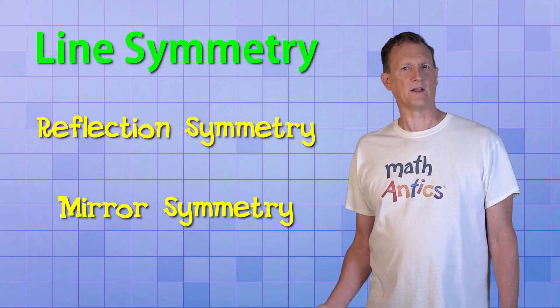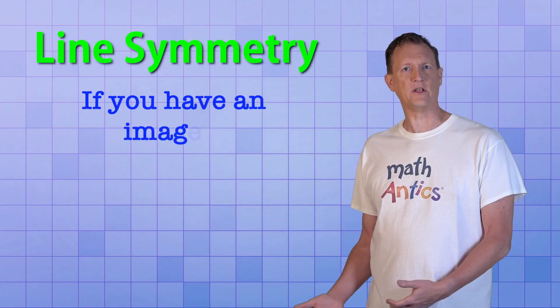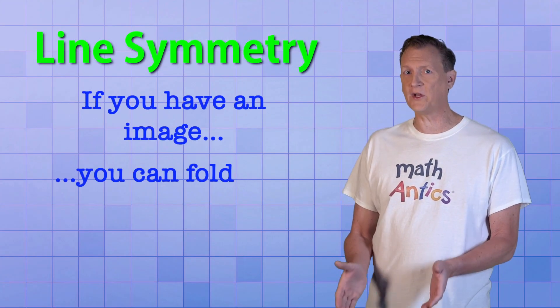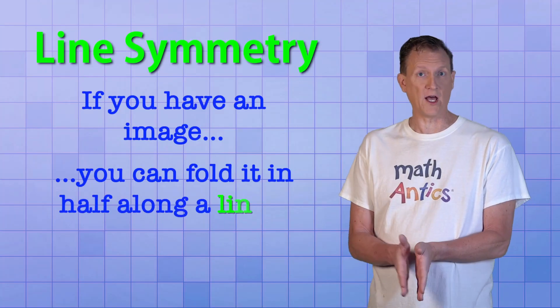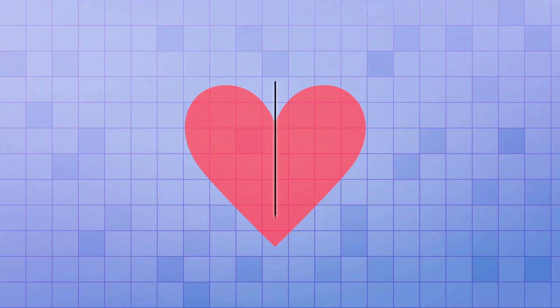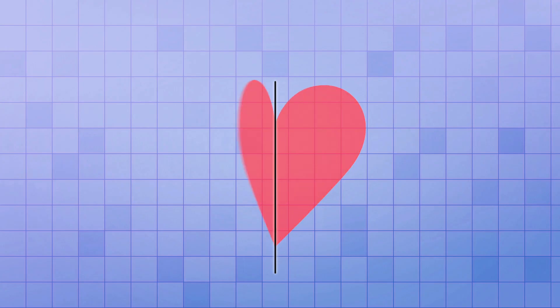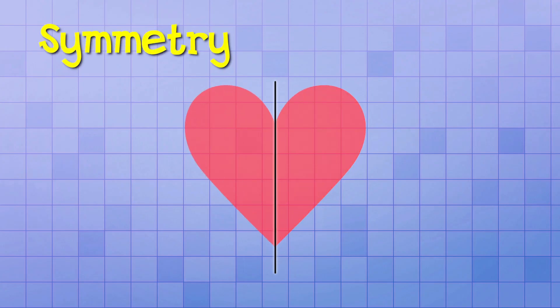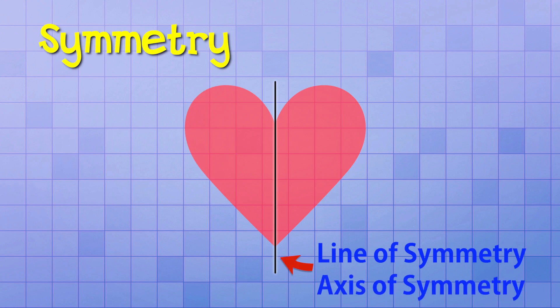Another way to think about line symmetry is that if you have an image, you can fold it in half along a line, and both halves of the image will match. We'll fold it along this line that goes right through the middle. Both halves match exactly. This image has symmetry, and the line we folded it on is called the line of symmetry, or the axis of symmetry.